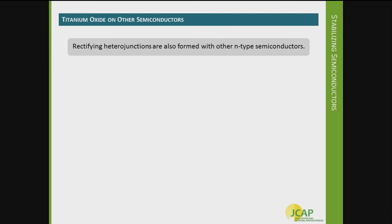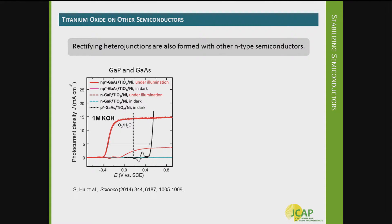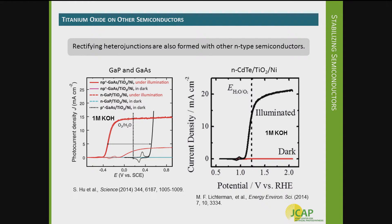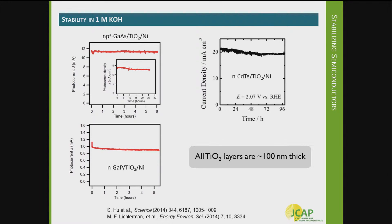In addition to silicon, this TiO2 material has been deposited on other n-type semiconductors and shown to be protective while forming rectifying heterojunctions. This includes gallium phosphide, gallium arsenide, and n-type cadmium telluride — all in conjunction with TiO2 and nickel layers, showing good rectifying properties. The photocurrent stability plots accompanying those cyclic voltammograms show that TiO2 layers 100 nanometers thick greatly enhance the stability of all these materials.